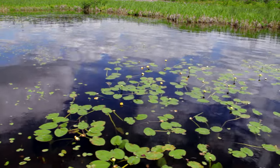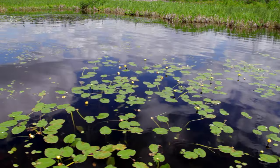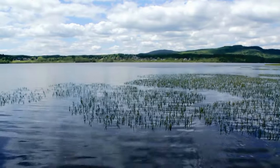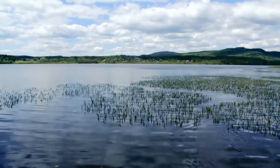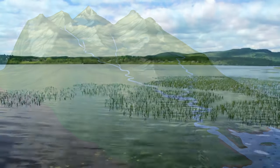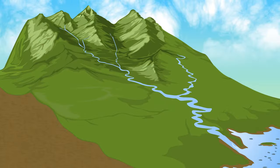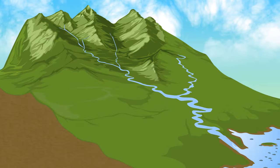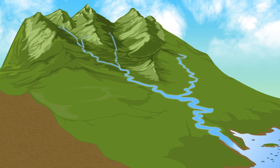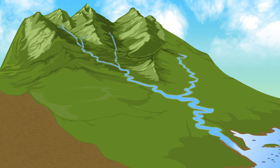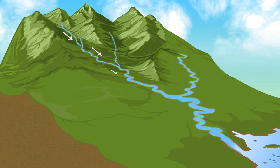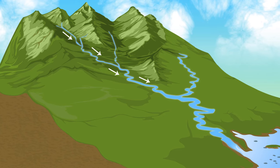Vous êtes présentement en plein cœur du bassin versant de la rivière Saint-Charles. Mais au fait, qu'est-ce qu'un bassin versant? Un bassin versant est un territoire où l'ensemble de l'eau de surface et du ruissellement pluvial s'écoule comme dans un entonnoir, par gravité, vers un même point.